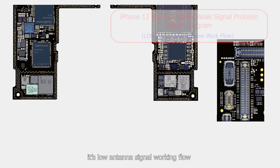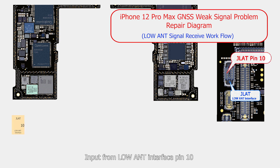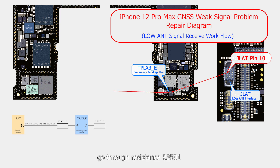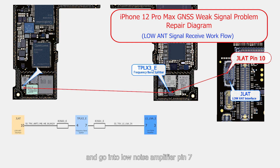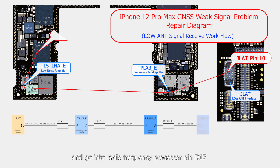Next, it's the low antenna signal working flow. GNSS received signal input from low antenna interface pin 10. Go through resistance R3105 and go into frequency band splitter pin 4. Then output from splitter pin 7, go through resistance R3105, and go into low noise amplifier pin 7. Finally, output from amplifier pin 3, go through resistance R3301, and go into radio frequency processor pin D17.